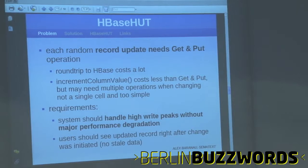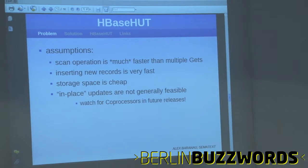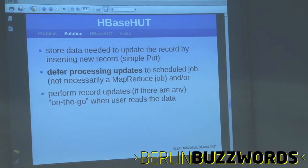The next thing is HBaseHUD. The problem here is that for each update operation on a record, we usually need to perform a GET and then a PUT operation. This results in round trips to HBase and costs a lot. There are some alternatives, but they are limited. What we want is to handle high write peaks without major performance degradation, without going back and forth. These are actually properties of the HBase system, and they apply to many other column-based databases.